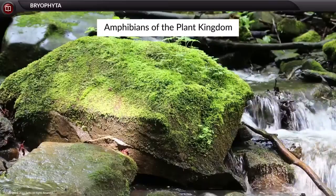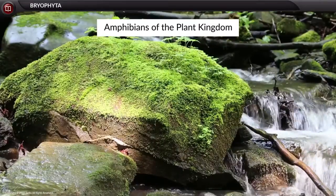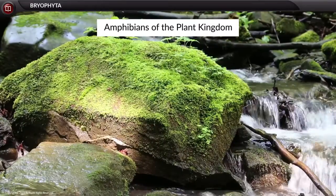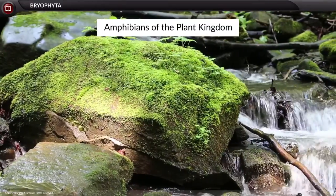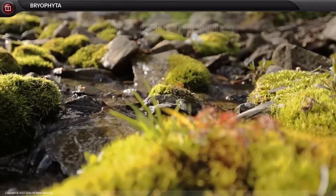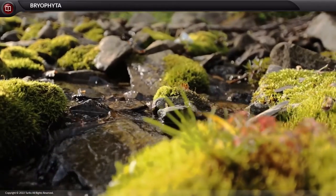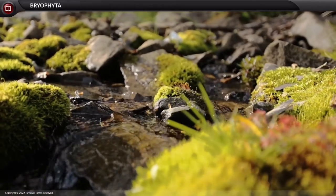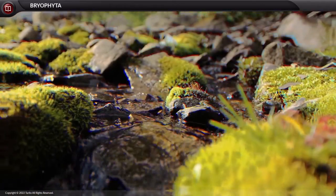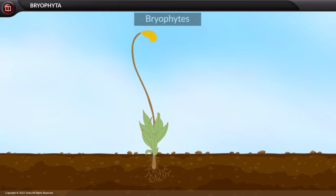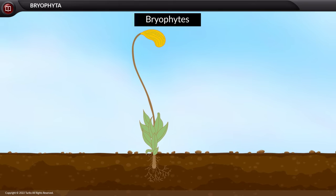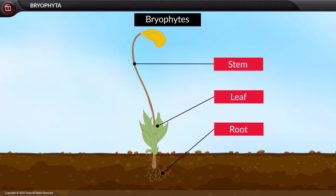They can survive on land yet require water for reproduction, hence they are seen on moist and damp lands. Bryophytes have a differentiated plant body that bears root-like, leaf-like, and stem-like structures.